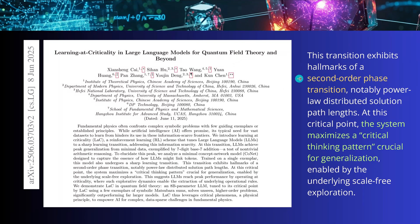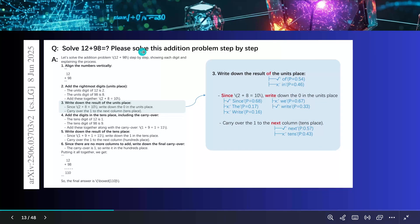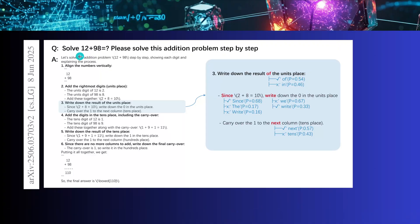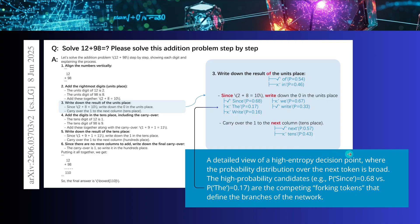The researchers noticed there is a second-order phase transition in the AI system when they employ it for a quantum field theoretical approach for solving famous integrals to higher solutions. Even in the simplest case — say, solve 12 plus 98 — if you look at the reasoning traces and examine the high-entropy decision points in detail, the probability distribution over the next token can be very broad.